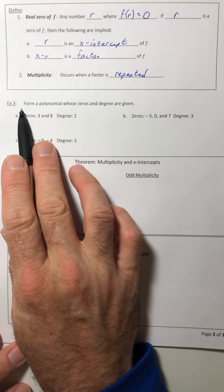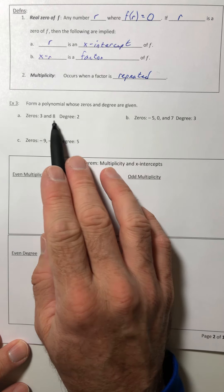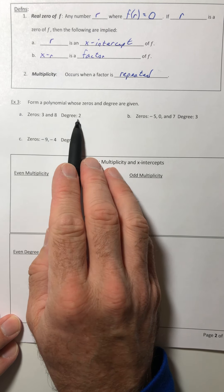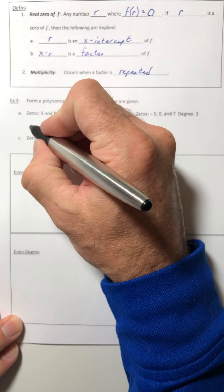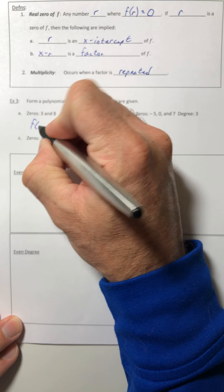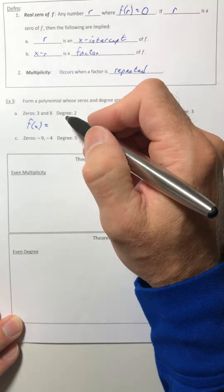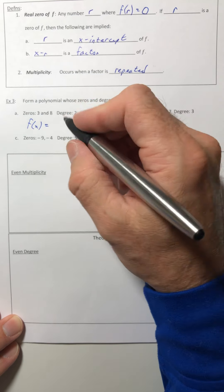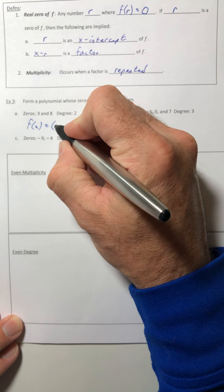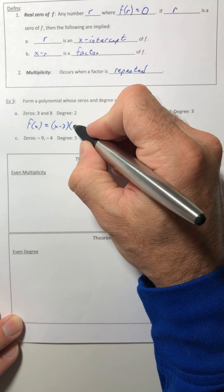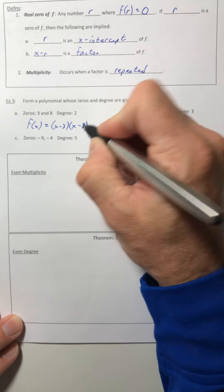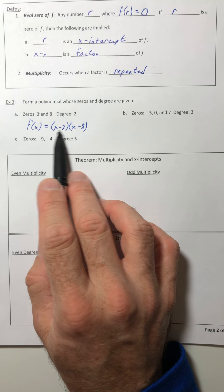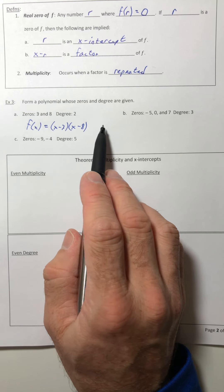So first, let's form a polynomial whose zeros and degree are given. Okay, so we've got zeros three and eight with a degree of two. So your polynomial would be like f of x is equal to, and to go from the zero back to the polynomial, you're basically just switching the sign. So x minus three times x minus eight. And then if we check, this is going to have a degree of two, so you don't need to put an exponent on it.